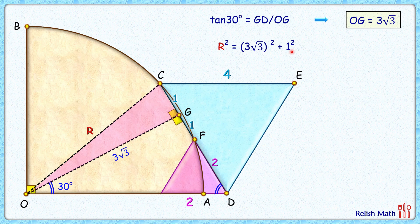3 root 3 squared is 27, 1 squared is 1, so R squared is 28. Simplifying, we get the value of R as 2 root 7 centimeters, and that's our answer.